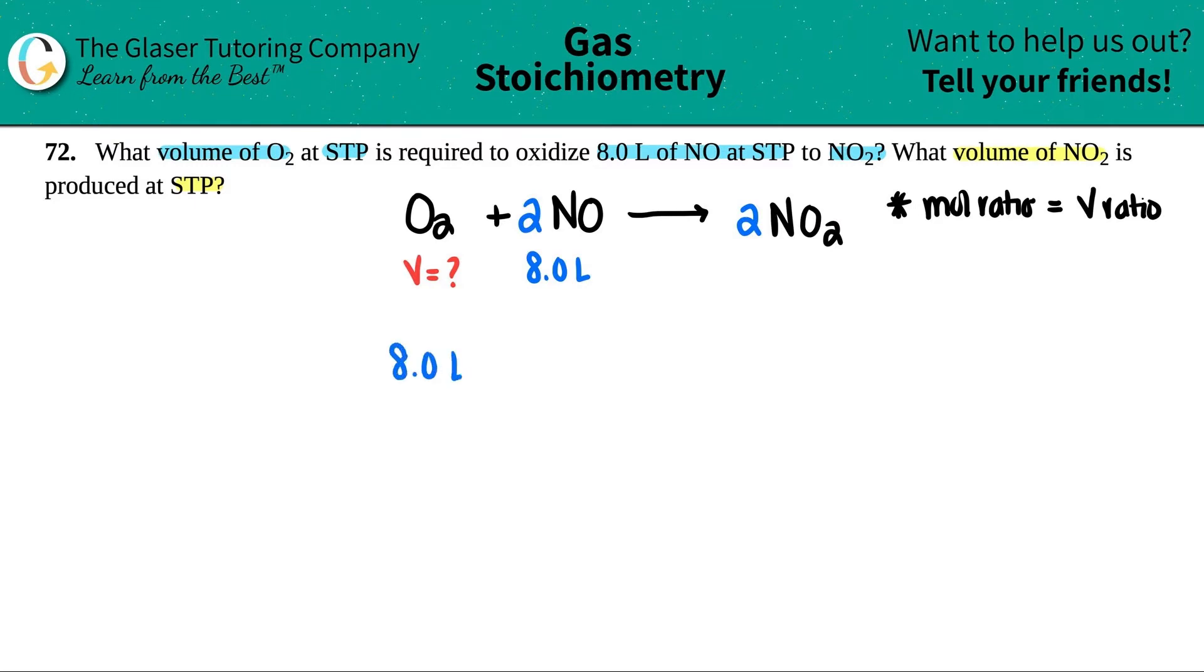We have 8.0 liters of NO times by the ratio. Put the liter of NO at the bottom. Now in this case, we want to solve for the volume. If this is in liters, this has to be in liters as well. So I'm going to say liters of O2. Now the question is, what are the numbers that go here, right? We'll treat it as a mole ratio. Mole ratios, we always look at the coefficients. So for example, there was nothing in front of the O2, but that just means that there was one of them. So I'm going to put a 1 in front of the O2. There was a 2 in front of the NO, so I'm going to put a 2 down here. The liters cancel out, and now all I have to do is literally 8 divided by 2 is 4. So I have 4.0 liters of O2. And that answers the first question.